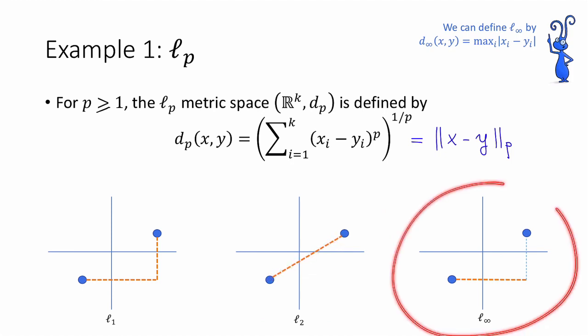We can also define the L∞ distance, which is defined as the maximum in any coordinate of the differences between x and y. So again, in this example, the distance between this point and this point is this distance.